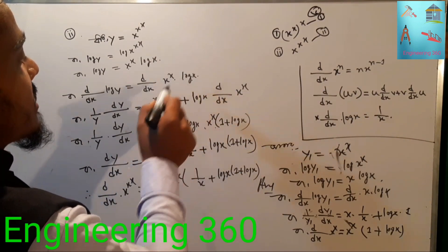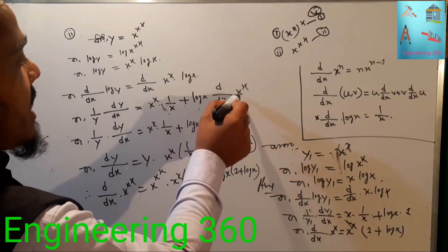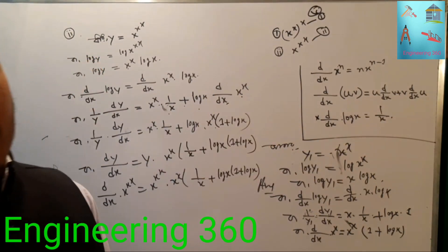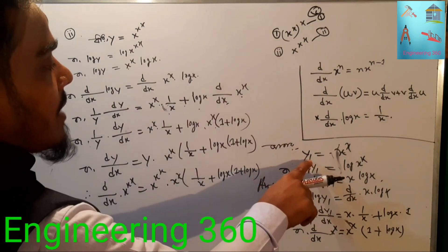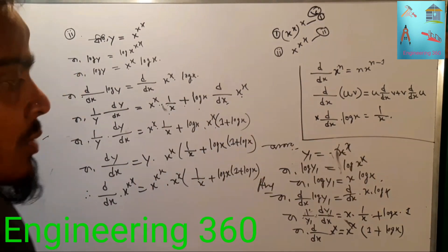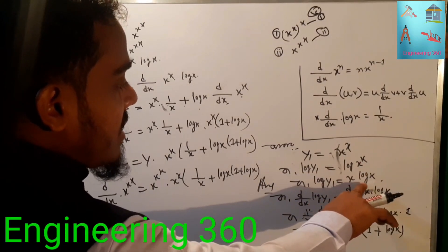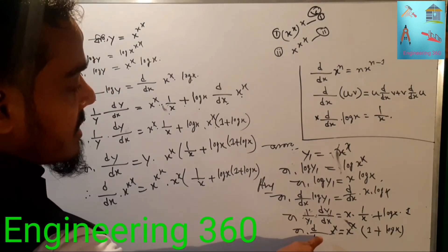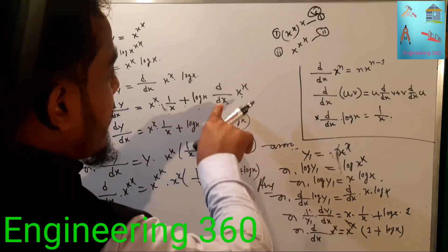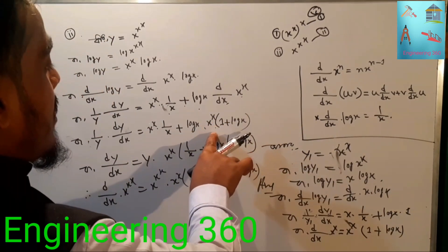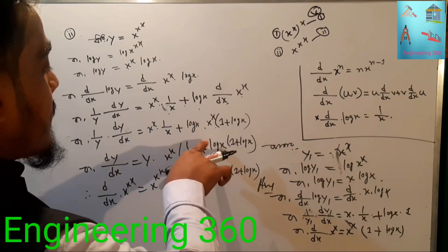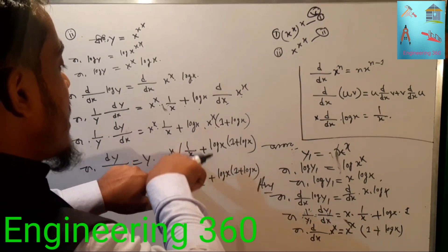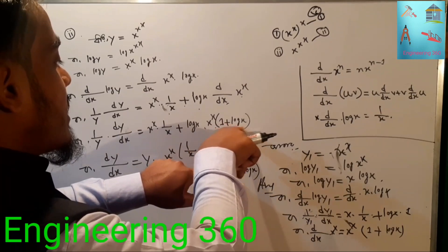To summarize the key result: d/dx of x to the power x equals x to the power x times (1 plus log x). This result was used as a sub-step. The overall differentiation is complete. The answer combines the outer function with d/dx(x to the power x) times (1 by x plus log x)(1 plus log x).